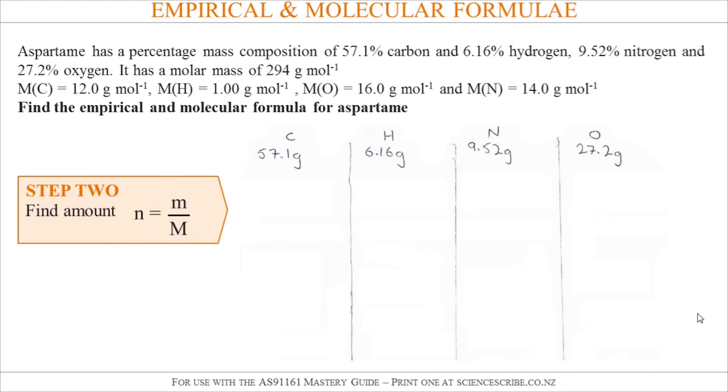The second step is to use our beloved formula n equals little m over big M, and we take each of those masses and divide it by the molar mass. So for carbon it's got a molar mass of 12, take the 57.1 divide it by 12. For hydrogen the molar mass is 1, 6.16 over 1. Do the same for nitrogen and oxygen.